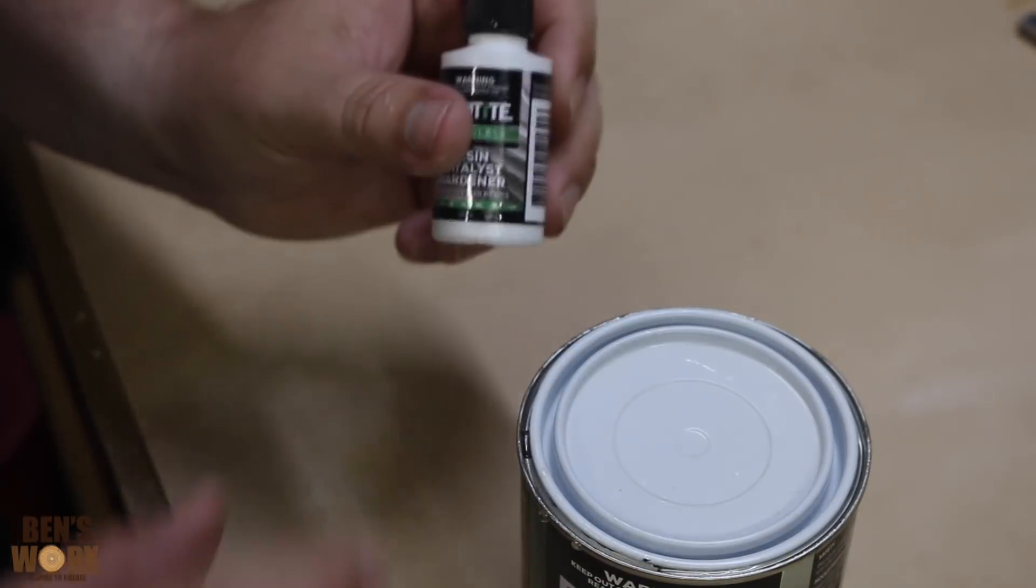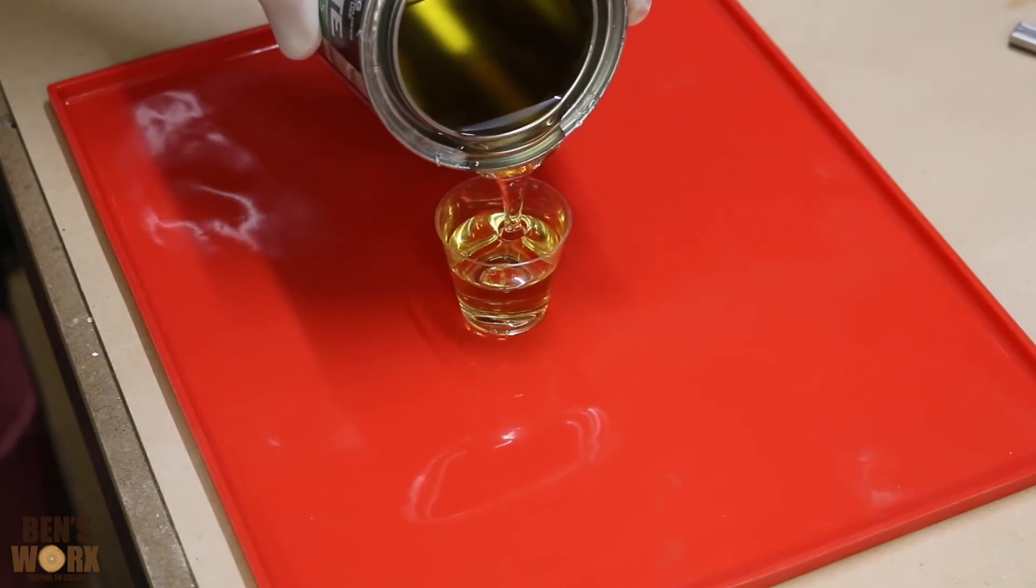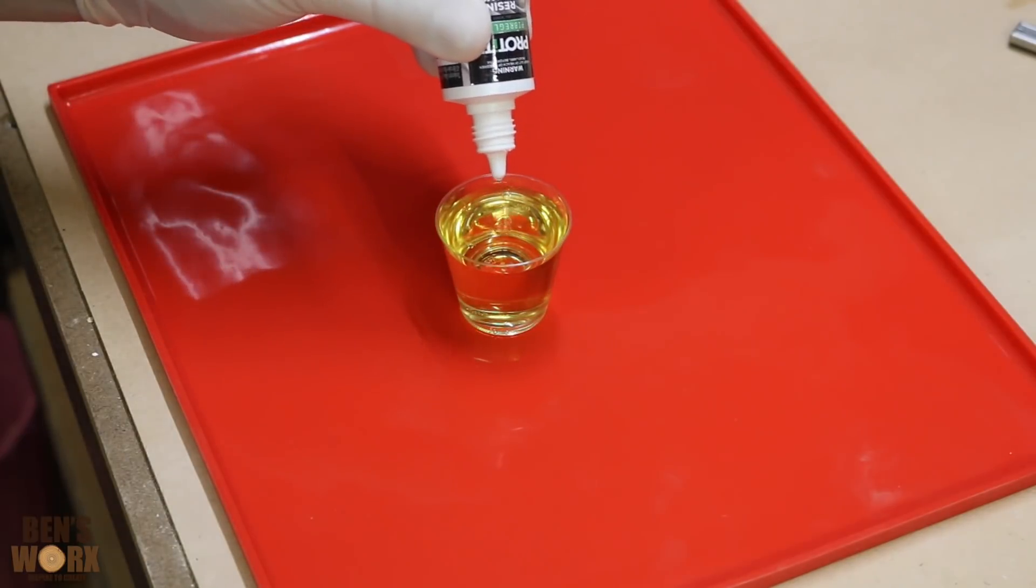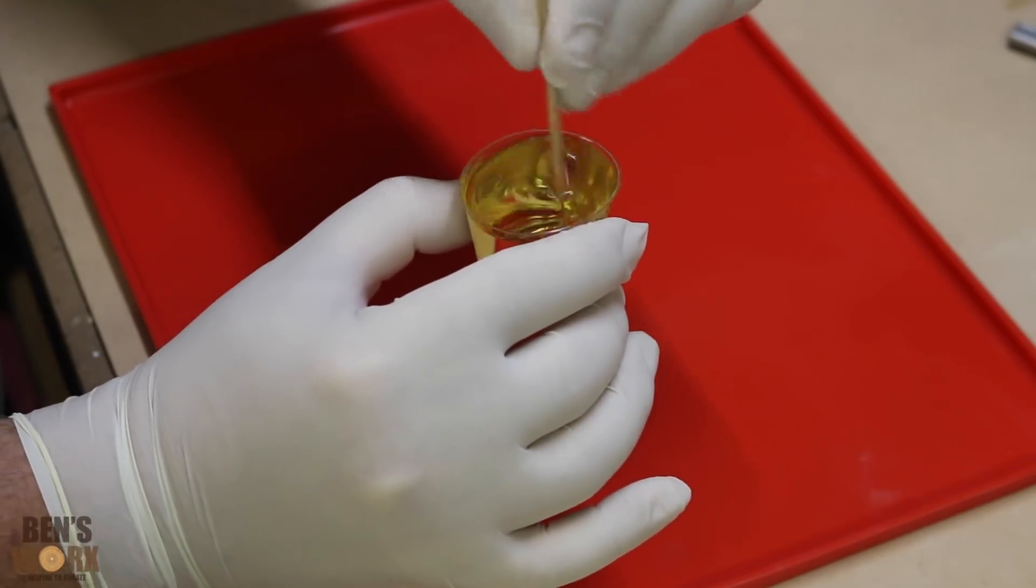I'm just going to use a casting resin today with an activator. So 30 mils of resin, eight drops of activator. So it's really important that you mix this thoroughly because if not, it's just not going to set.